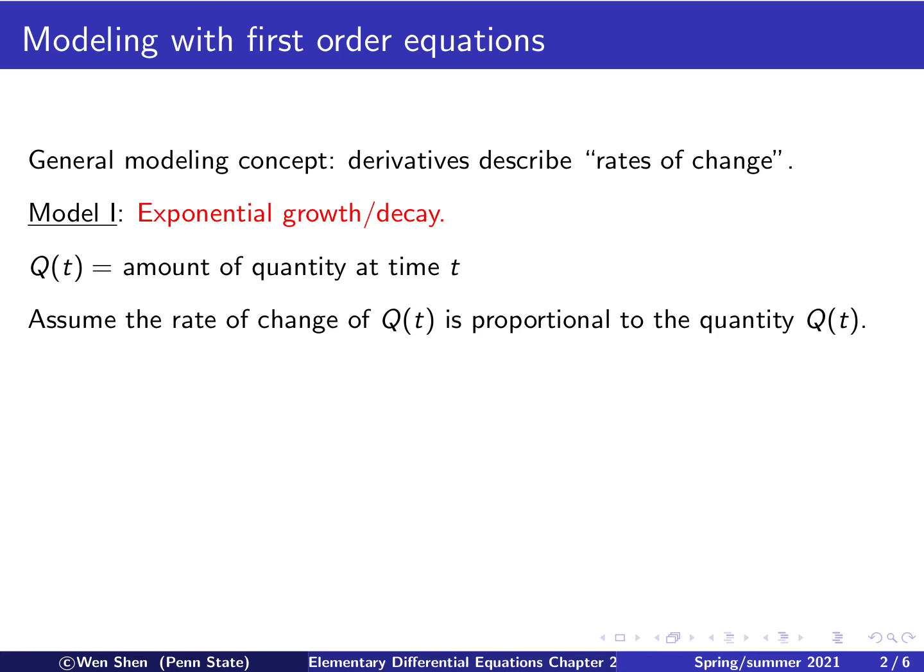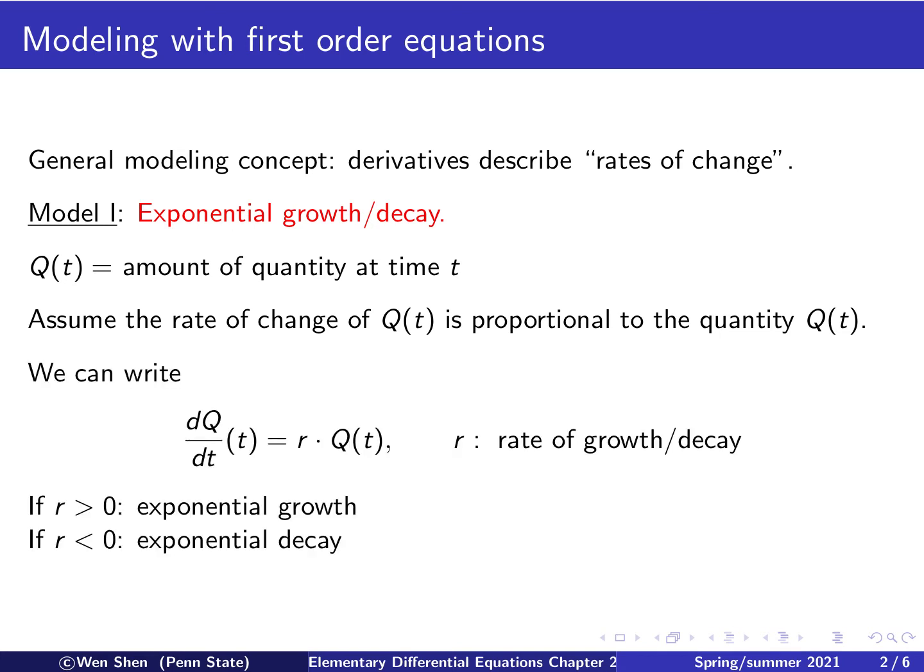Okay, so how do we translate this sentence into a mathematical equation? Okay, so we see that it says rate of change of Q(t). So that is described by the derivative. So dQ/dt at t corresponds to the equal sign. And then proportional to the quantity Q(t), which means it equals to Q(t) times a constant r.